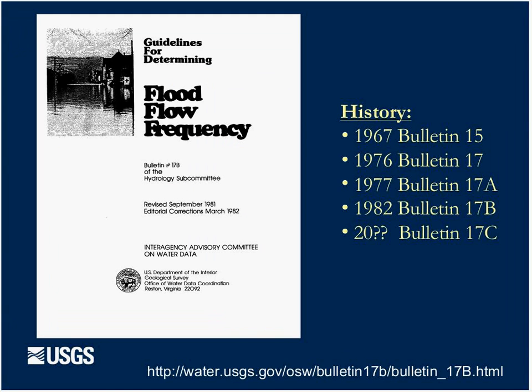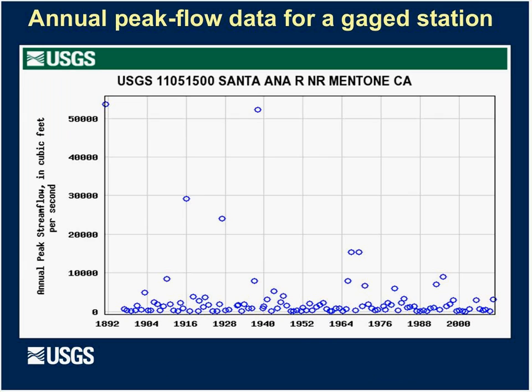For the flood frequency project in California, we use the guidelines in Bulletin 17b. There's a group called the Hydrologic Frequency Analysis Workgroup, HFOG, that is working to implement the recommendations in Bulletin 17b, including some improvements, and they're trying to produce an updated Bulletin 17c. During this study, we incorporated some of these new methods, which I'll briefly go over.